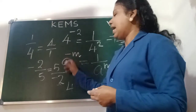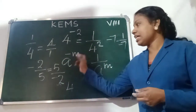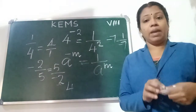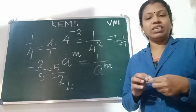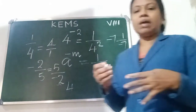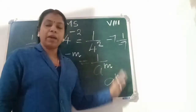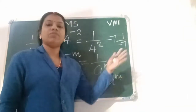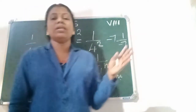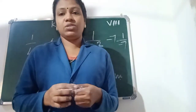In our general form, A raised to minus M equals 1 by A raised to M. Here, A raised to minus M is the multiplicative inverse of A raised to M. The multiplicative inverse of A raised to M is 1 by A raised to M, which equals A raised to minus M.